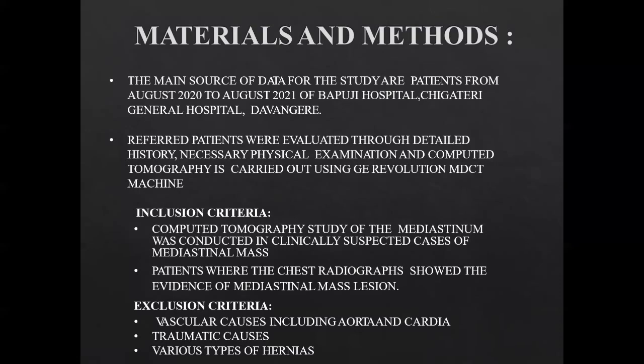Materials and methods: the main source of data are patients from August 2020 to August 2021 from Bapuji Hospital and Chigateri General Hospital, Davanagere. Referred patients were evaluated through detailed history, necessary physical examination, and computed tomography carried out using a GE Revolution MDCT machine. Inclusion criteria included clinically suspected cases of mediastinal masses and patients whose chest radiograph showed evidence of a mediastinal mass lesion. Exclusion criteria included vascular causes including aorta and cardiac, traumatic cases, and various types of hernias.